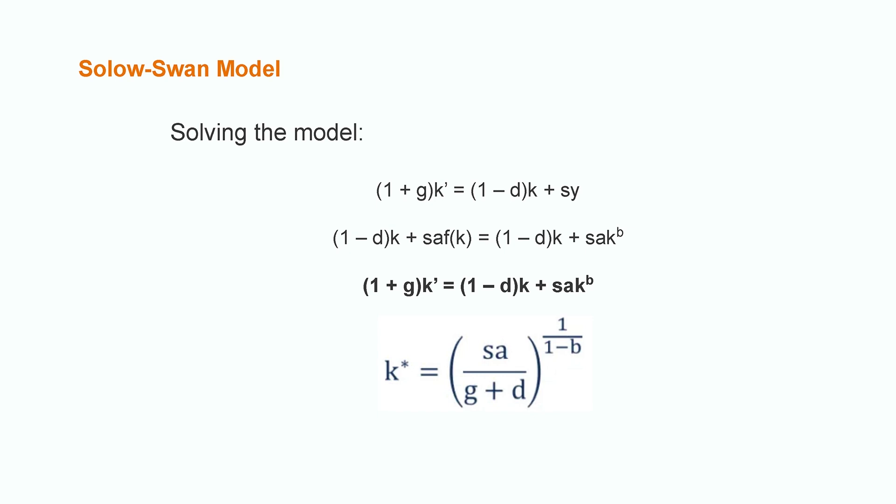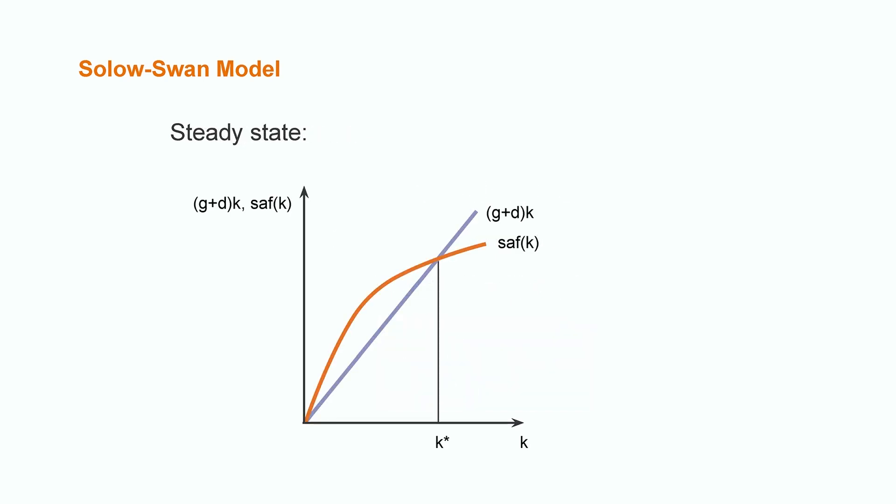Solving this, we arrive at the steady state K*, which shows us the point where capital per worker stays constant. This graph reflects two curves: the savings rate, which is the blue curve, and the capital accumulation curve, which is the light blue line. The intersection shows us an amount of capital per worker K and output per worker Y that arrive at a steady state, meaning that they do not change.